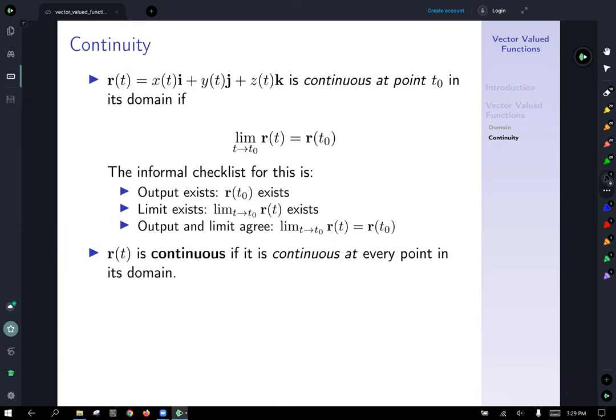What does it mean to be continuous at a point? Our usual r of t generic vector valued function here is continuous at a point t zero in its domain if the limit exists. The limit as t approaches t zero of our function r matches the function r output at t zero.